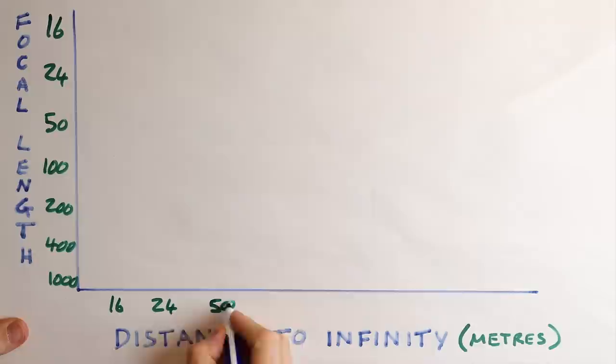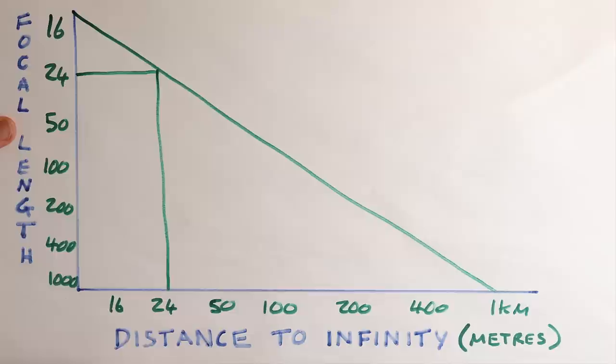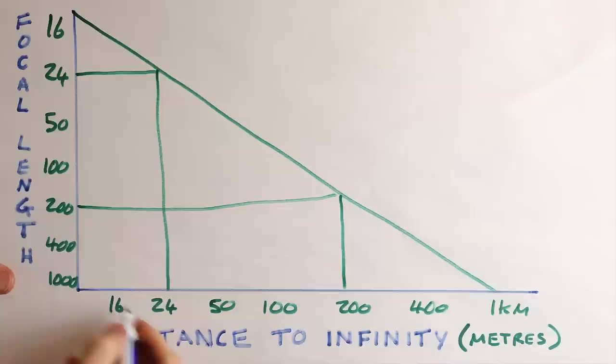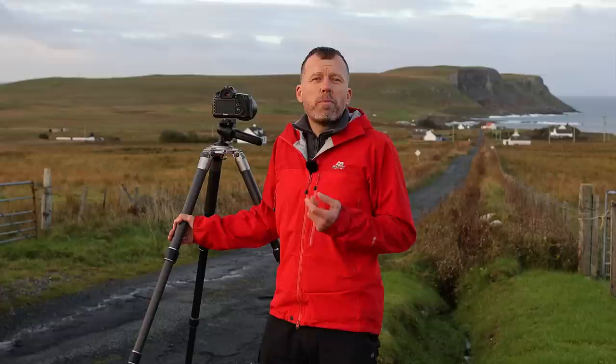Basically, the longer the focal length, the further into the distance we need to go before we reach infinity. There's a very precise way of working out exactly where infinity starts for any given focal length, and then there's a rule of thumb way which is perfectly adequate for most situations. All you need to do is convert your focal length in millimetres into metres. This is roughly where infinity will start. So if we are using a 24mm lens, then infinity will start somewhere around 24 metres from the camera. If we are using a 200mm lens, then infinity won't start until somewhere around 200 metres away. And if we are using a 1000mm lens, then we may not reach infinity until around one kilometre or further.